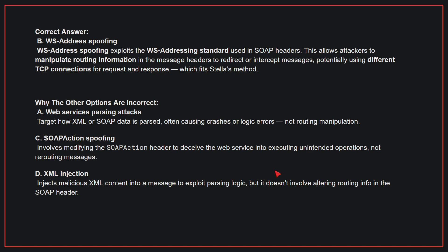Why the other options are incorrect: A, web services parsing attacks — these target how XML or SOAP data is parsed, often causing crashes or logic errors, not routing manipulation. C, SOAP action spoofing — this involves modifying the SOAP action header to deceive the web service into executing unintended operations, not rerouting messages. D, XML injection — this injects malicious XML content into a message to exploit parsing logic, but it doesn't involve altering routing info in the SOAP header.